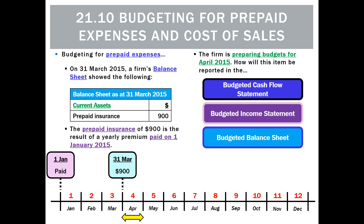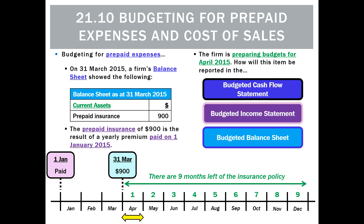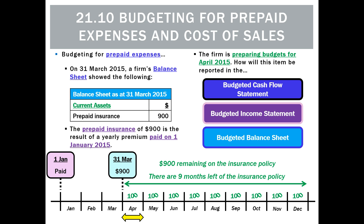We know that there are 12 months in a year and we know that we paid $1,200 — we can imply that because there are nine months of the insurance policy left and the balance is $900. So that must be $100 each month, leaving $900 as a prepaid asset for the next nine months.